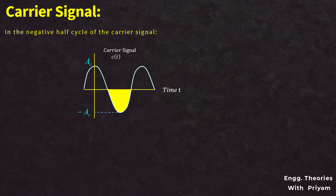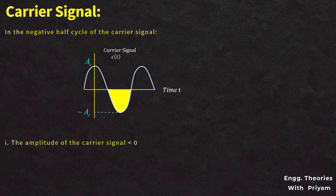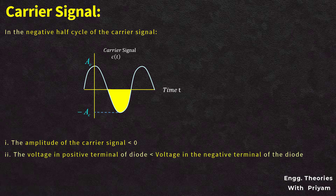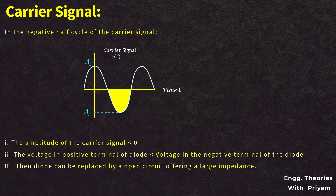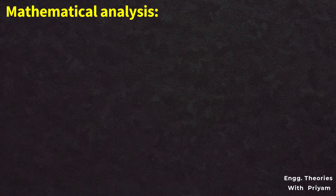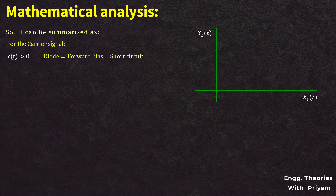In the negative half cycle of the carrier signal, the amplitude is less than zero, so the voltage at the positive terminal of the diode is less than at the negative terminal. The diode is then reverse biased and can be replaced by an open circuit offering very high impedance, so the diode will not allow the signal to pass. These conditions can be summarized as: when c(t) > 0, the diode is forward biased, replaced by a short circuit, and allows x1(t) to pass.